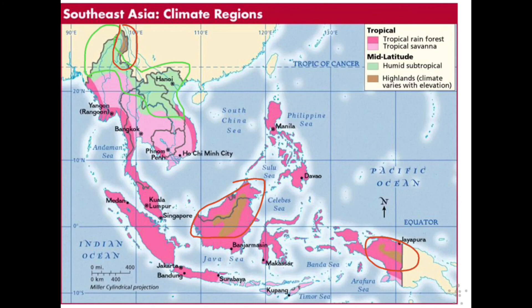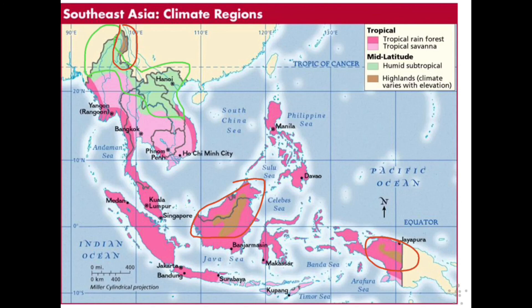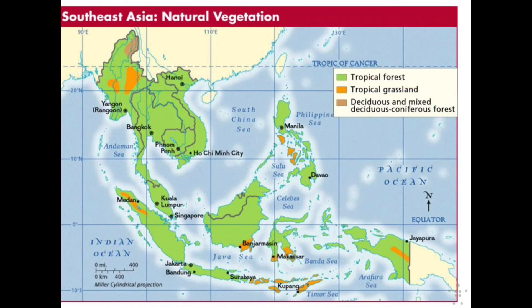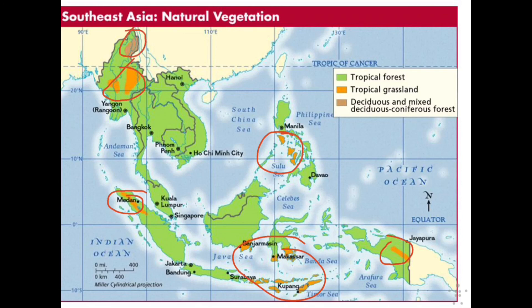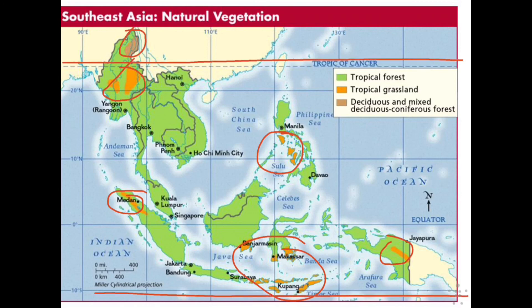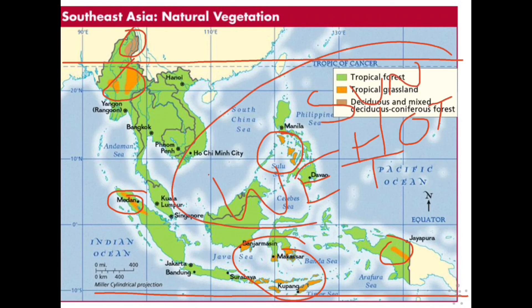Evergreen forests appear the higher up you go in the highland climate zones. The natural vegetation map for this region is probably the easiest out of any region — it's mainly tropical forests. In tropical savanna zones there's a little bit of tropical grassland, and in the far northern highland zone there's a deciduous mix. Other than that, tropical forest vegetation dominates this region based on its latitude — generally hot, receiving a lot of direct sunlight, and wet — which all means humidity and tropical rainforest.